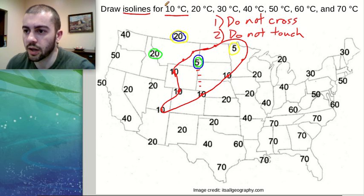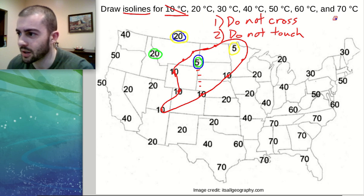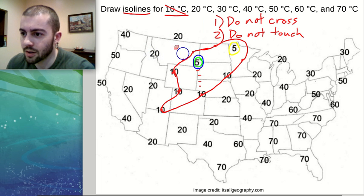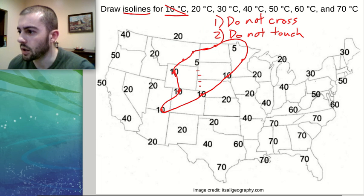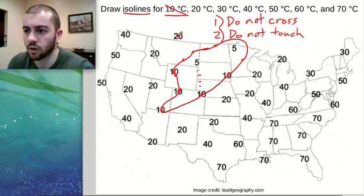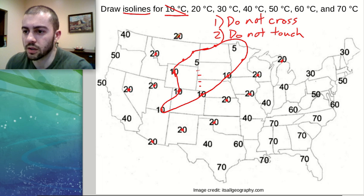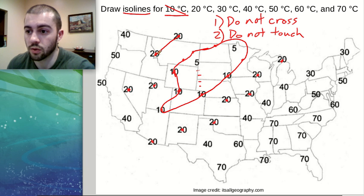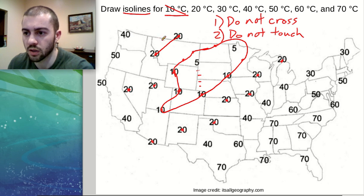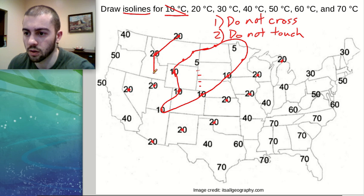Our next ISO line, now that we've done 10 degrees Celsius, is 20 degrees Celsius. We want to connect all of our 20-degree values, putting dots on those to mark where our 20-degree ISO line will pass through. We can start connecting these dots. We have 5 degrees and 40 degrees here, so 20 fits between those two numbers. Does 20 fit between 10 degrees and 50 degrees? It does, so we can come down here and connect towards that mark.